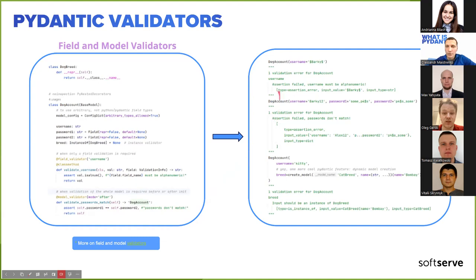Error examples: 'doc_account.username bar_key is not alphanumeric — username must be alphanumeric'. 'Passwords don't match — assertion failed'. And a dynamically created model using 'create_model' shows 'validation error for DogAccount — input should be an instance of DogBreed', confirming the InstanceOf validator worked.